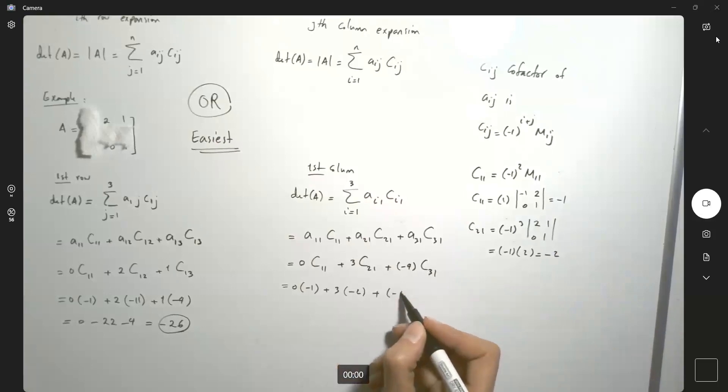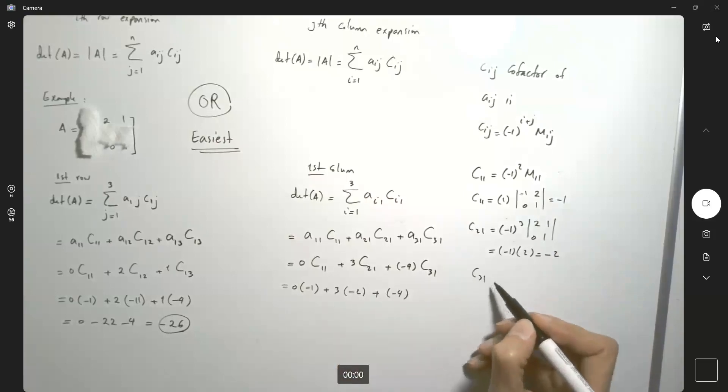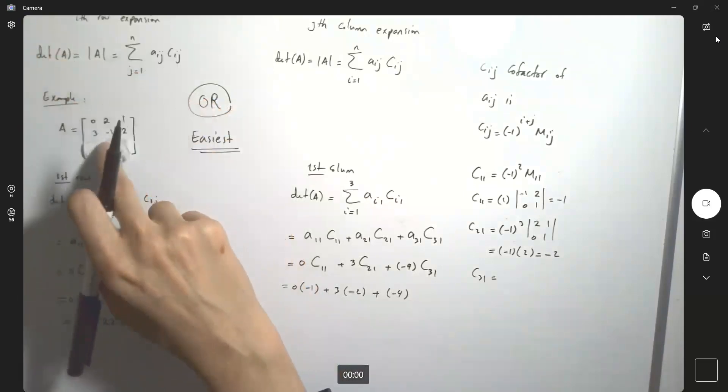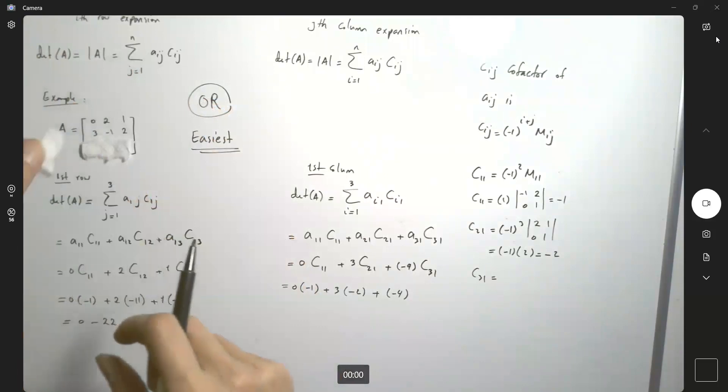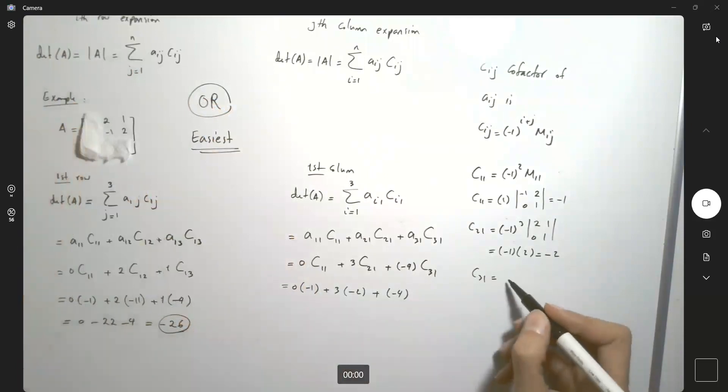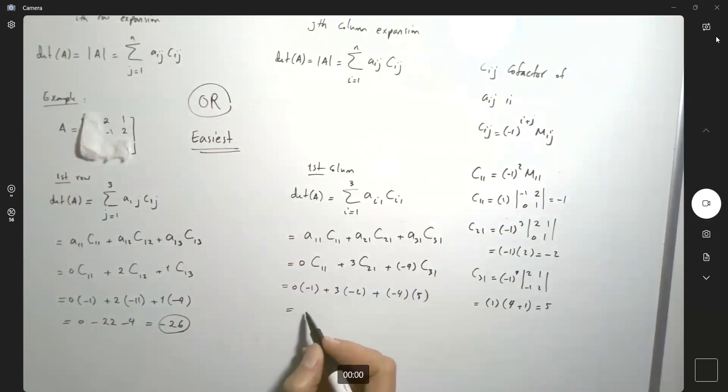So now we are eliminating the third row and the very first column. So you end up with this matrix: (-1)^4 times the determinant of this matrix. So this becomes 1 times (4 - (-1)) or 5. So this is 0 - 6 - 20, which gives you -26. As you can see, the determinant is the same.